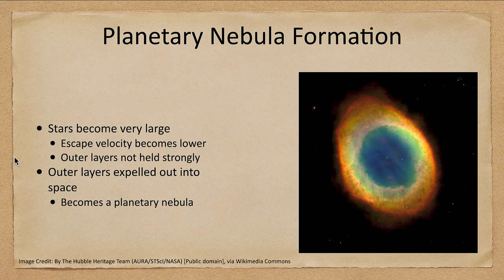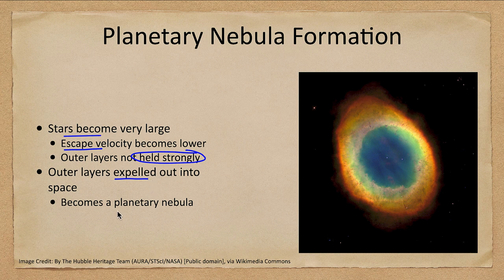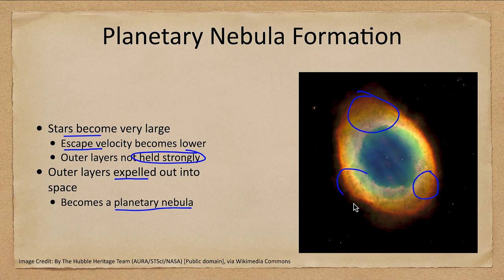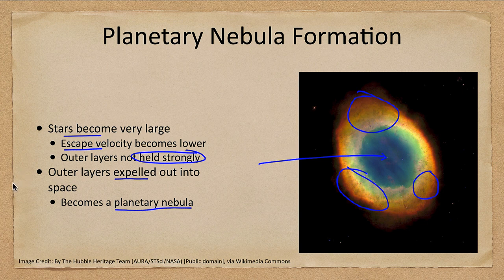As the star grows larger, the outer layers become unstable. The escape velocity is lower, so the outer layers are not strongly held by gravity. Eventually instabilities and pulsations push off those outer layers, which are expelled into space giving us a planetary nebula — such as the Ring Nebula shown here. The outer layers form the visible nebula, while the extremely hot core left behind forms a white dwarf star at the center.